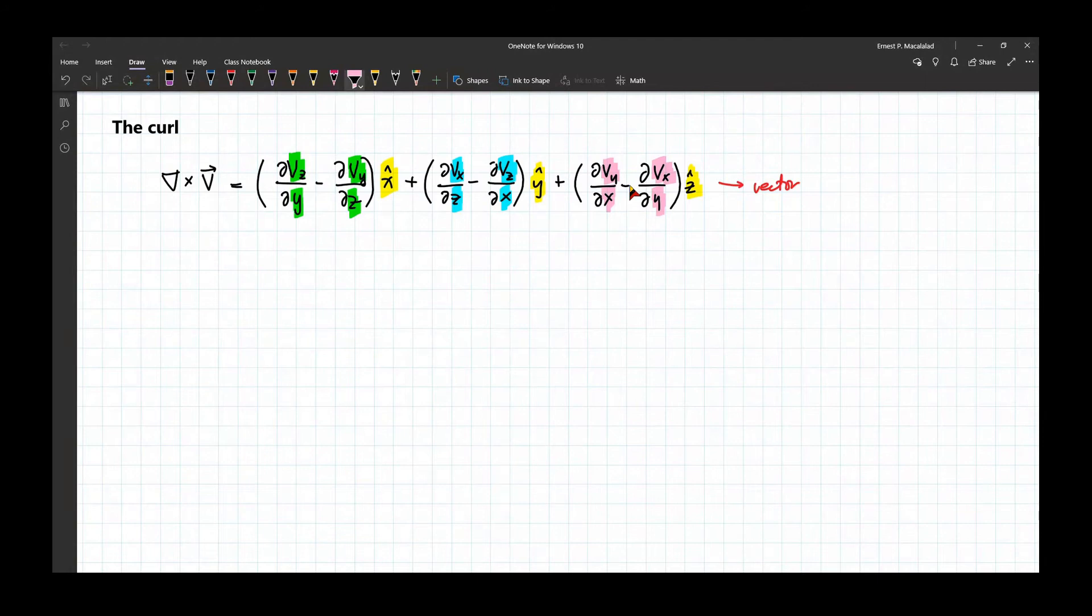Now, let's go to the interpretation. So the geometric interpretation of the curl is that the curl of a vector field v is a measure of how much the vector v swirls around a point of measure. So for example, again, let me repeat that. The curl of a vector field v is a measure of how much the vector field v swirls around a point of measure.